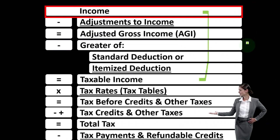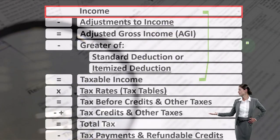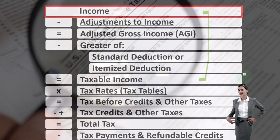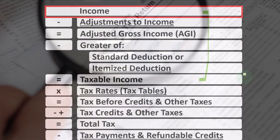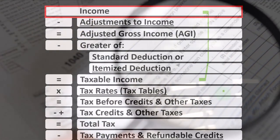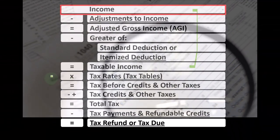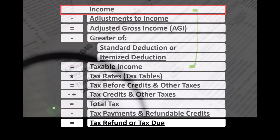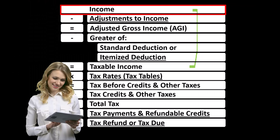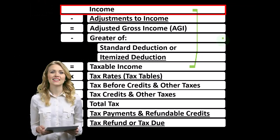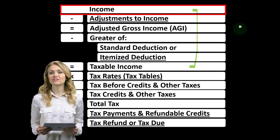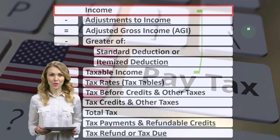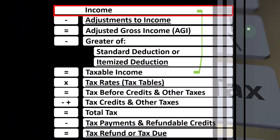The below-the-line deductions, or the greater of the standard or the itemized deductions, get us to the equivalent of net income — in this case, the taxable income. The second half of the equation is focused on the calculation of the tax, then applying any other taxes, credits, and payments to get to the tax refund or the amount due. So we're focused up top on the income statement type of calculation to get down to that taxable income.